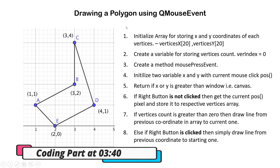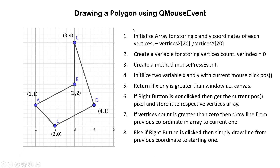First we will see how the process of drawing a polygon using QMouseEvent works. When we draw a polygon on a canvas designed in Qt Creator, we first need to collect all the points where the mouse press event has occurred. We will be maintaining two arrays: vertices_x and vertices_y. Vertices_x will store the x coordinate and vertices_y will store the y coordinate of each vertex.